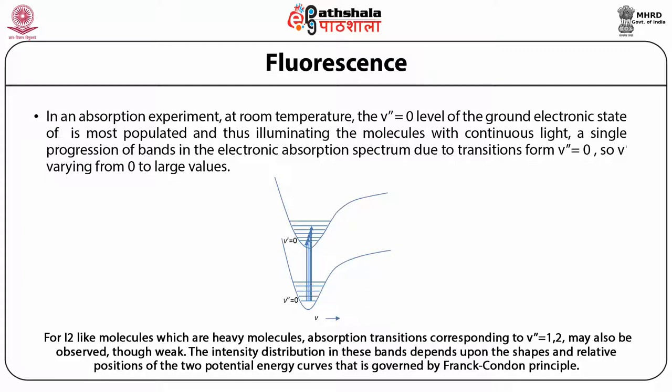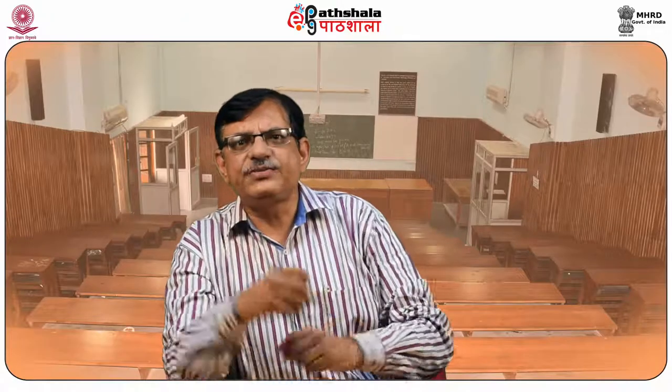The intensity distribution in these bands depends upon the shapes and relative positions of the two potential energy curves, governed by the Franck-Condon principle. The absorption spectra display the pattern of vibrational levels up to the limit of dissociation, and the dissociation energy of the molecule in the excited electronic state can be deduced. There are now at least two different processes by which the excited molecule can lose its excess energy and return to its ground state.